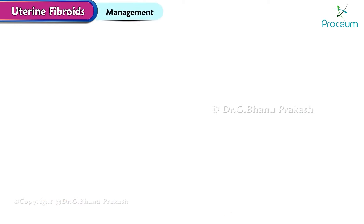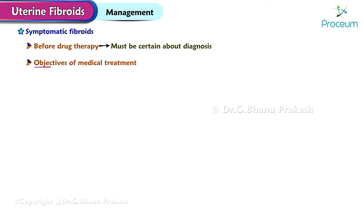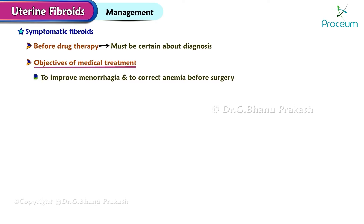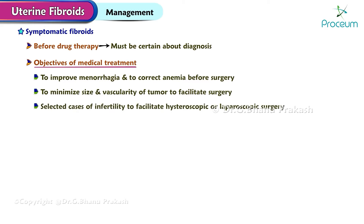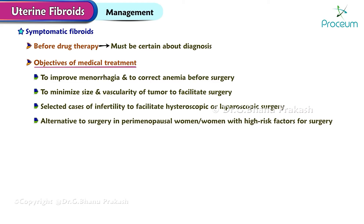Management of fibroid uterus - in symptomatic fibroids, before drug therapy one must be certain about the diagnosis. The objectives of medical treatment are: to improve menorrhagia and to correct anemia before surgery; to minimize the size and vascularity of the tumor to facilitate surgery; in selected cases of infertility to facilitate hysteroscopic or laparoscopic surgery; as an alternative to surgery in perimenopausal women or women with high risk factors for surgery; and where postponement of surgery is planned temporarily.